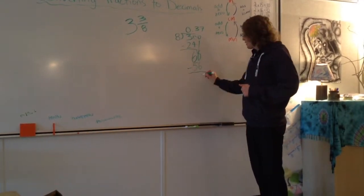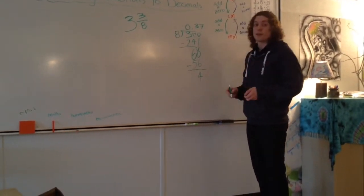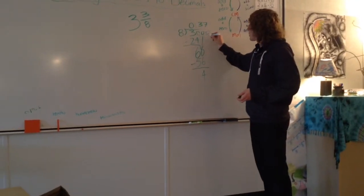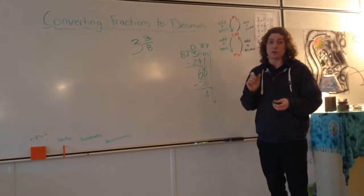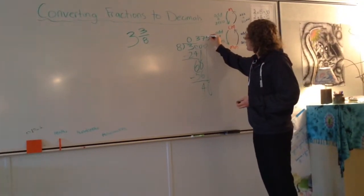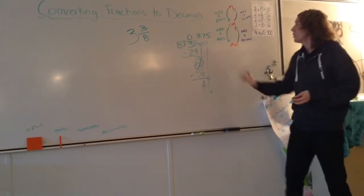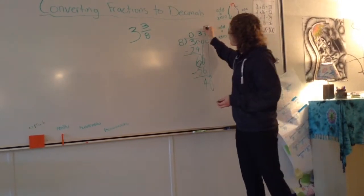60 take away 56 is equal to 4. We'll add another zero because we can't drop it down there, and 8 does go into 40 an equal amount of times, 5 times. So now we have our 3/8 as a decimal.